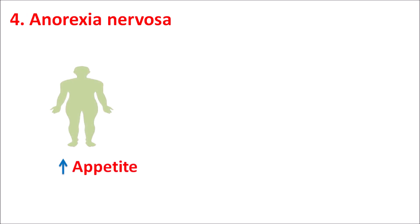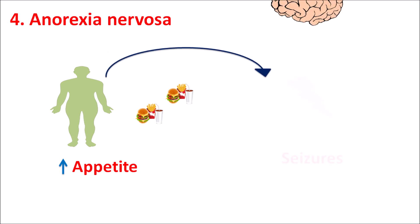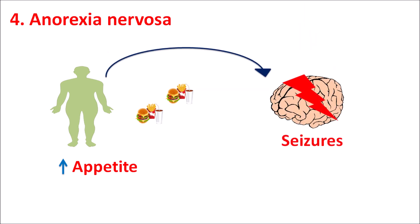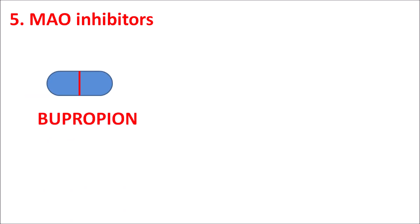The fourth concern is anorexia nervosa. Patients with anorexia nervosa may have increased appetite and excessive neuronal activity. This neuronal stimulation can affect the CNS, resulting in an increased risk of seizures, so bupropion is contraindicated in such patients.